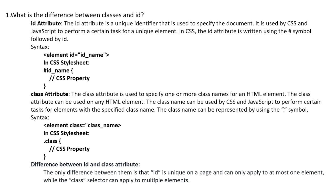Question 1: What is the difference between classes and ID? The ID attribute is a unique identifier that is used to specify the document. It is used by CSS and JavaScript to perform a certain task for a unique element. In CSS, the ID attribute is written using the hash symbol followed by the ID.